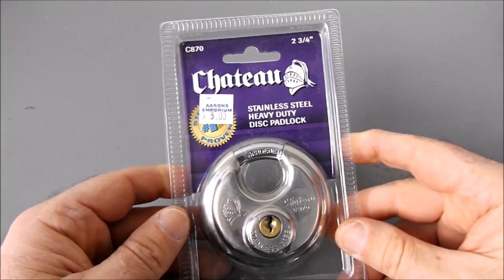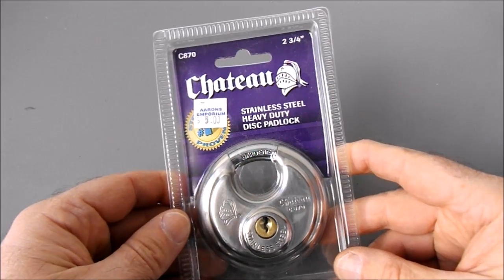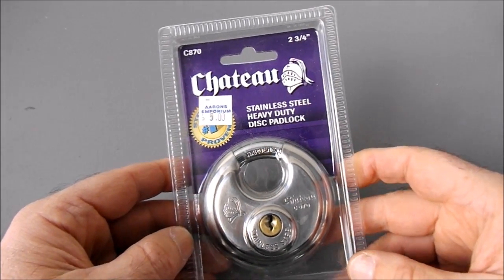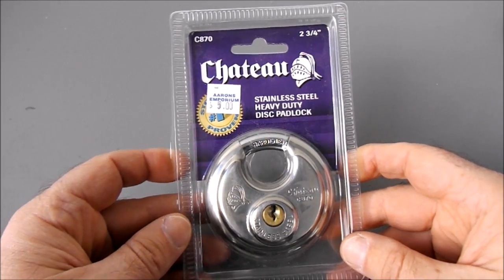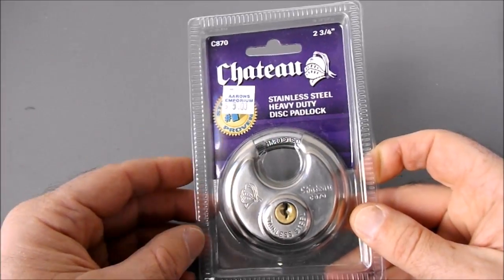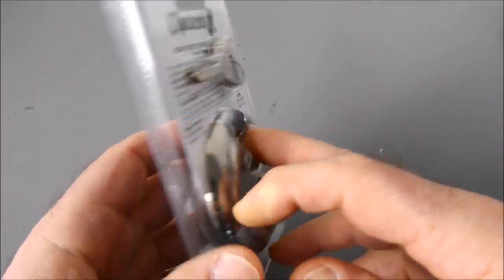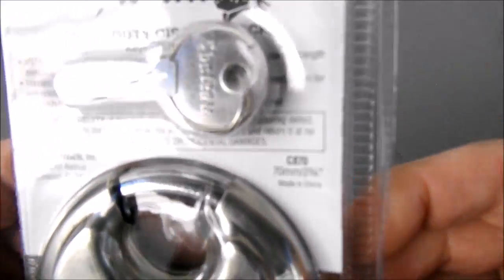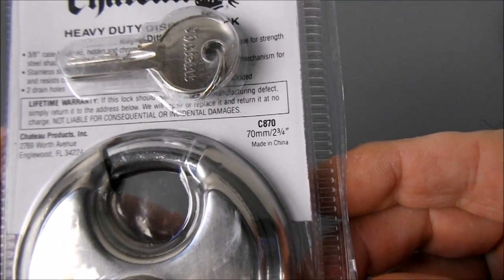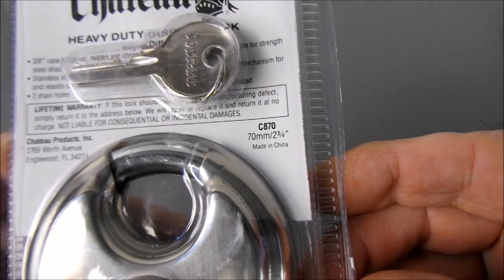Hello there, my name is Michael Maynard. The lock I've got today is a Chateau stainless steel heavy-duty disc padlock. We've all seen these before - these are modeled on a very old, very successful design. This one is, if you can see down in the bottom right hand corner there, made in China.